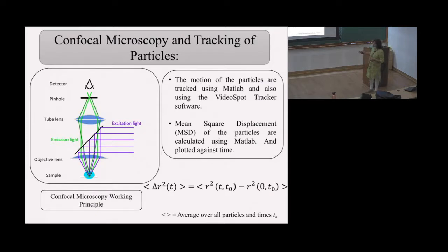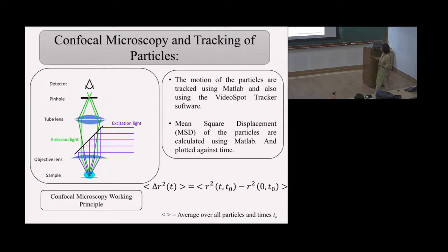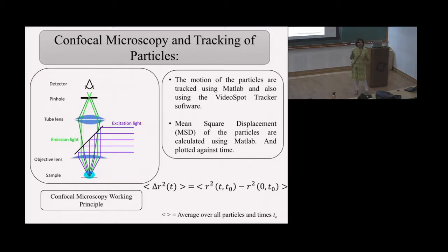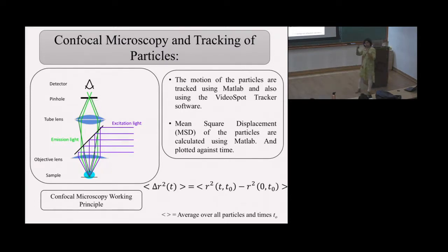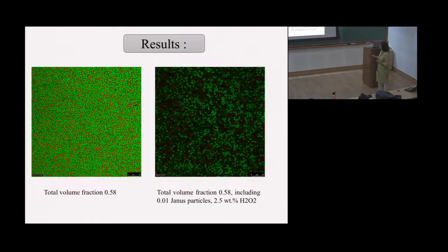We use a confocal microscope to differentiate the two particles using their different fluorescence emissions. We follow particles over several frames at about one frame per second. This is sufficient because we have a very jammed environment with very slow dynamics. We average the center-of-mass motion of each particle over many frames and many particles to get the mean square displacement.